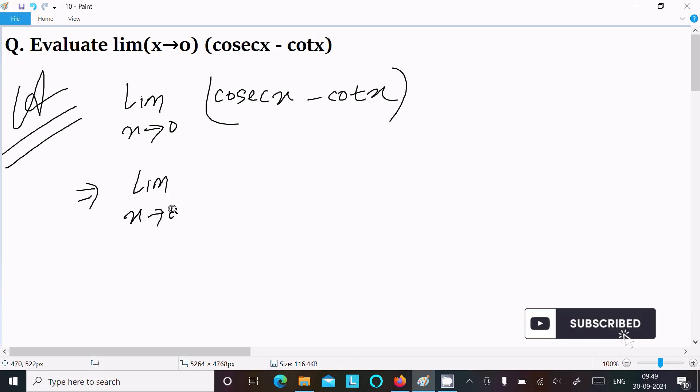Writing lim x→0, cosec x we can write as 1 by sin x, and cot x we can write as cos x by sin x.